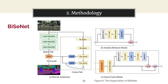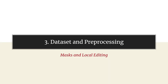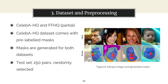Moving on to face parsing, BISENet is a state-of-the-art technique in semantic segmentation. By tackling specific problems of its predecessors, it achieves a good balance between accuracy and time consumed. The datasets used in this project are CelebAHQ and FFHQ. The CelebAHQ dataset comes with pre-labeled masks, but masks are generated for both datasets. For the test sets, 220 pairs — 500 images — are randomly selected. Figure 8 provides an example of sample images and generated masks.